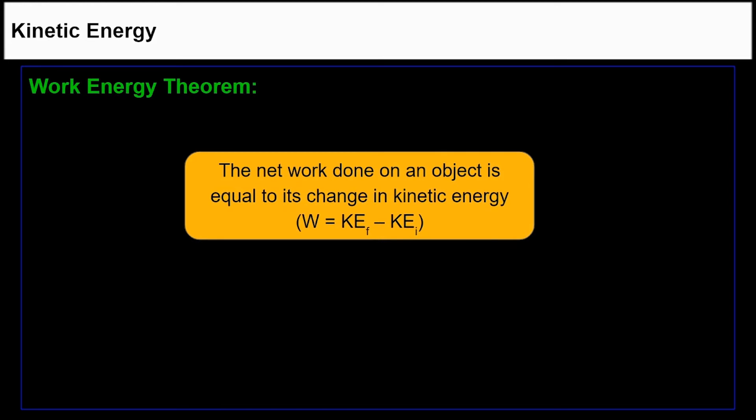Kinetic energy and work can be related through the work-energy theorem. According to this theorem, the net work done on an object equals its change in kinetic energy. We can express this as work equals final kinetic energy minus initial kinetic energy.